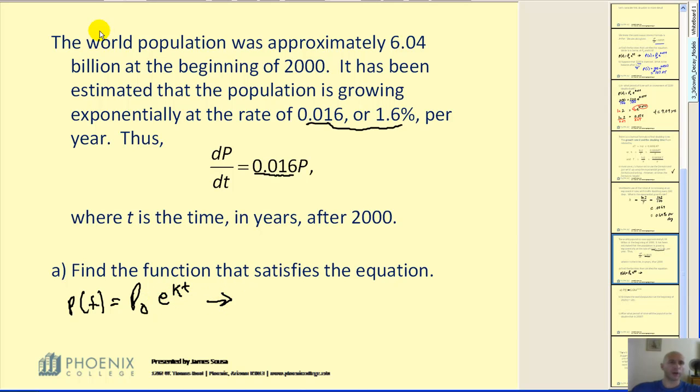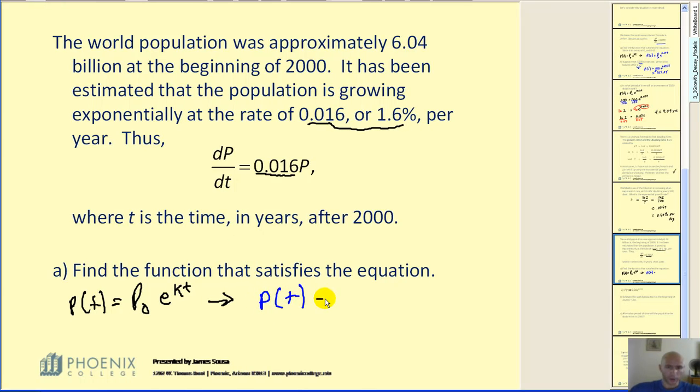Okay, so for this situation, P(t) is equal to the initial population referring to the year 2000, e to the power of 0.016 times t. Now, it is important to note that t equals 0, our base year, represents the year 2000.